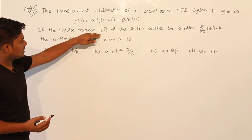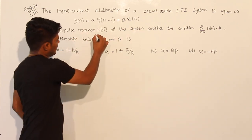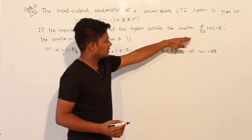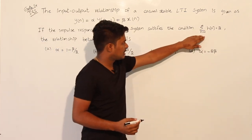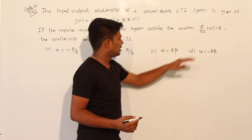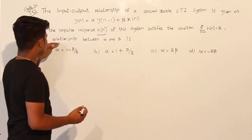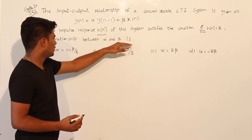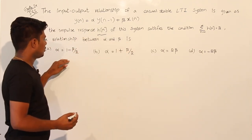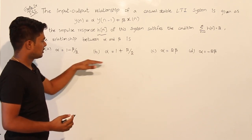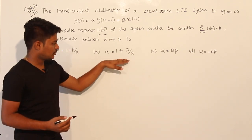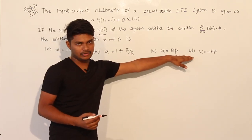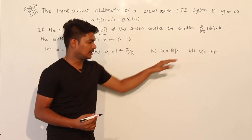If the impulse response h(n) of the system satisfies the condition: summation from n=0 to infinity of h(n) = 2, he is asking for the relationship between alpha and beta. The options are: alpha = 1 - beta/2, alpha = 1 + beta/2, alpha = 2·beta, or alpha = -2·beta.